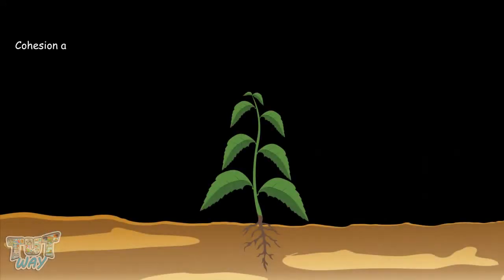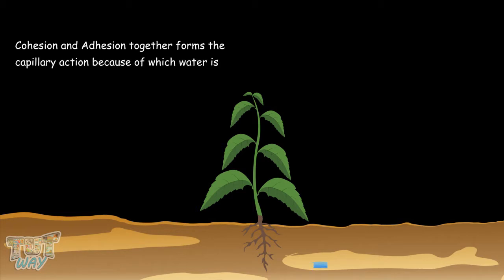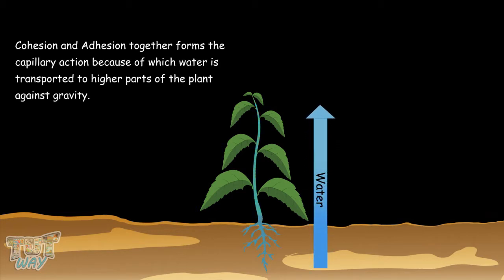Together, cohesion and adhesion form the capillary action, which lets water be transported to higher parts of the plant against gravity. Now, let's learn about capillary action.